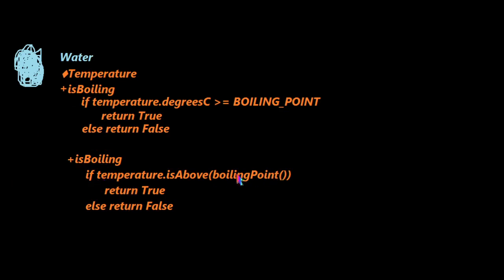We've now eliminated any reason for this to ever change again in the future. The only thing I would do is refactor the name to 'is_at_or_above' instead of 'is_above' — when I was first thinking of it I thought that was too long, but five minutes later I realized I should have named it 'is_at_or_above.' That's typical with refactoring names. There are no operators comparing any fixed values or anything like that, so if boiling point changes, none of it matters at all.